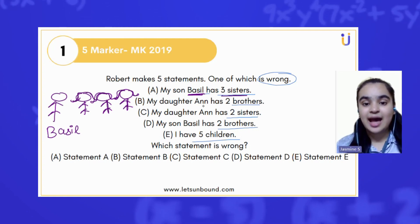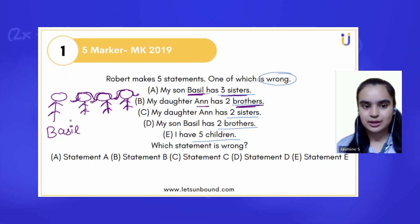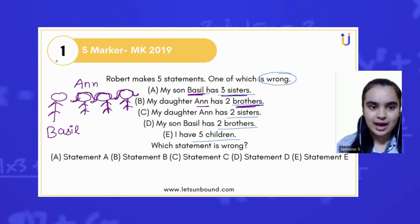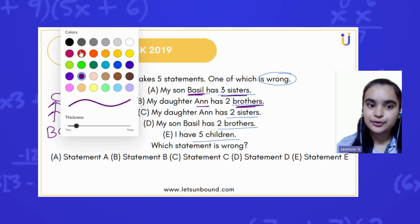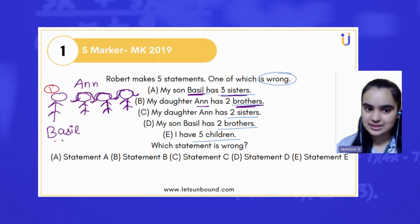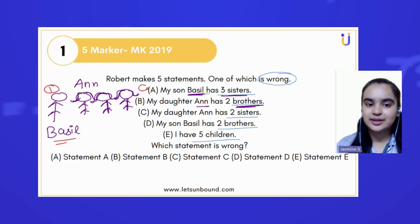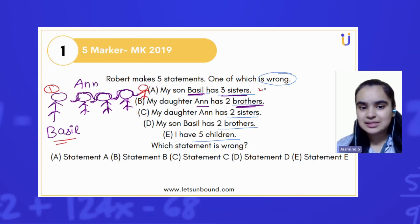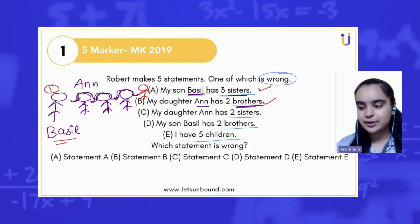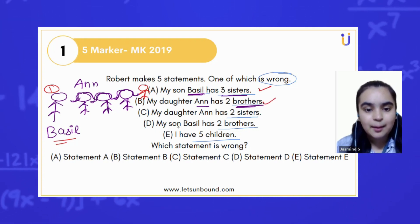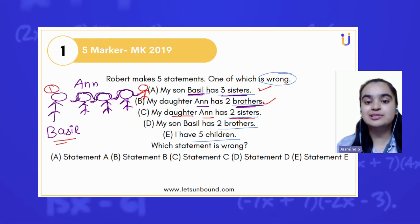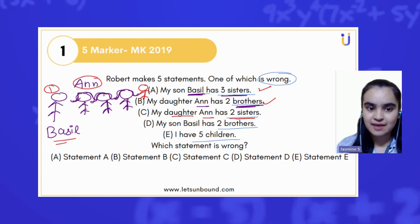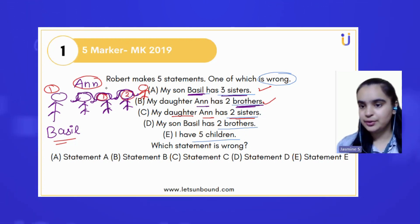Statement two: my daughter Anne has two brothers. Let's assume this is Anne, and Anne is having two brothers — brother number one and one more brother. Statement three: my daughter Anne has two sisters — sister number one and sister number two.